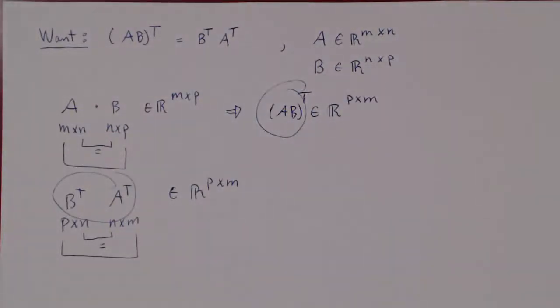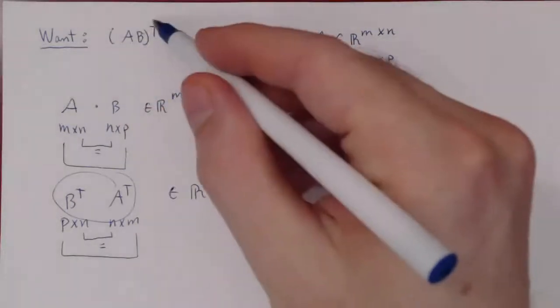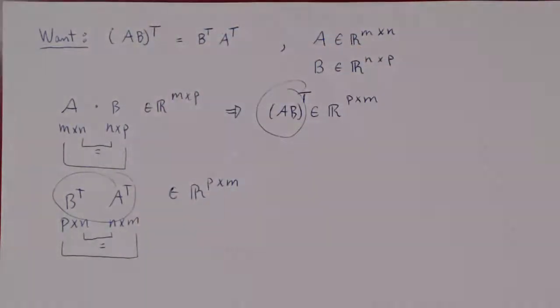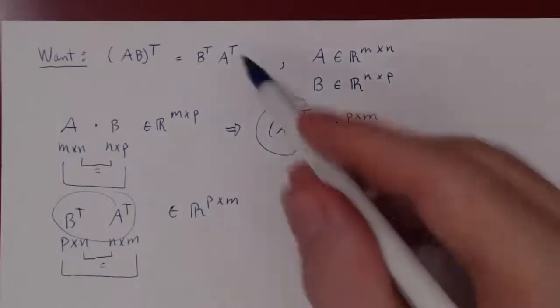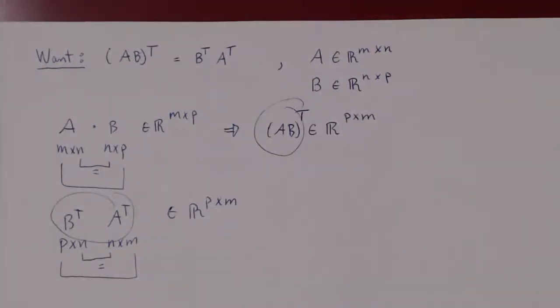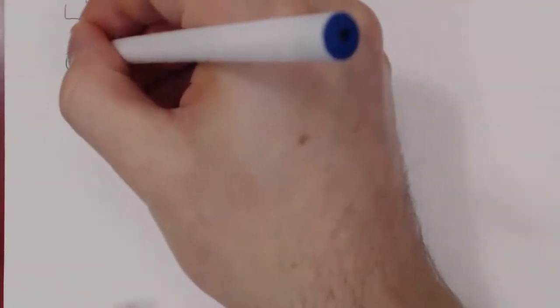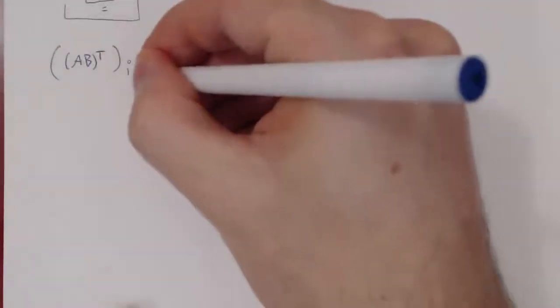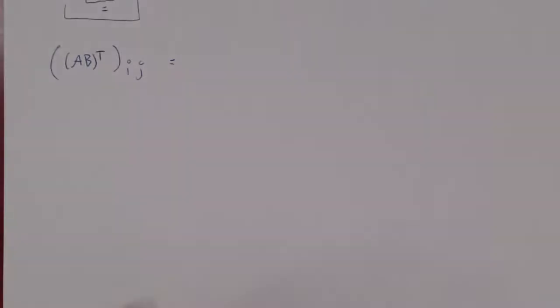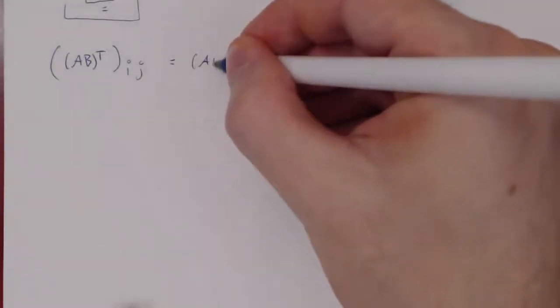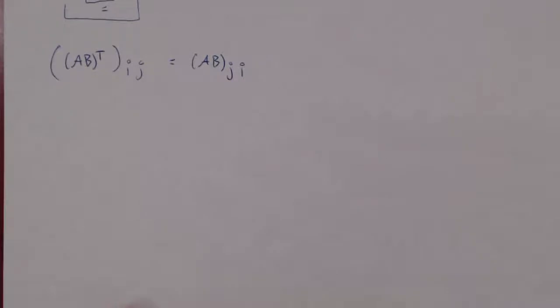The second part is we have to have the same corresponding entries. So let's take the entry of AB transposed in the i-th row, j-th column, and hopefully we'll get the entry of B transposed A transposed in the i-th row, j-th column. The entry of AB transposed at position (i, j) is simply the entry of AB in the j-th row, i-th column, because the transpose swaps rows for columns and columns for rows.